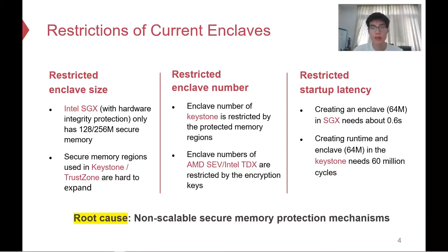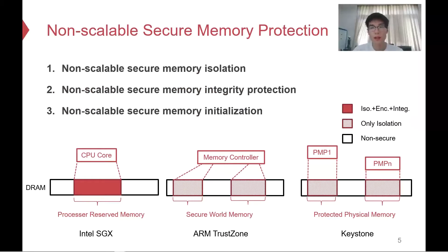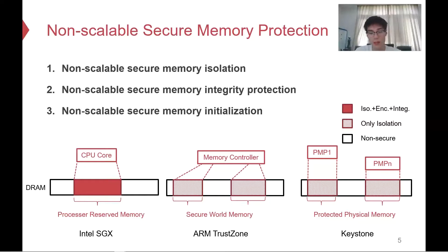So what causes these restrictions in current enclave systems? After careful analysis, we believe that non-scalable memory provisioning is the root cause. In SGX, the CPU provides a processor-reserved memory to store all enclave pages, protected with memory isolation, memory encryption, and integrity checks. As for TrustZone, it uses the TrustZone memory controller to configure several secure world memory regions, and Keystone leverages PMP registers to protect physical memory. There are three metrics of non-scalable memory provisioning: non-scalable secure memory isolation, non-scalable secure memory integrity caching, and non-scalable secure memory initialization.